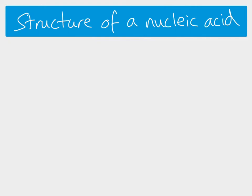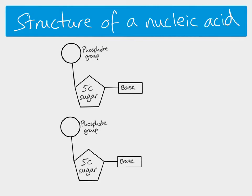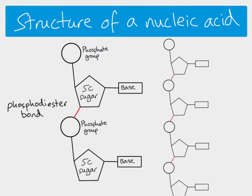Nucleic acid — so DNA or RNA — is made up of thousands of these nucleotides, all bonded together covalently. A bond is formed through a condensation reaction, and this bond joins the pentose sugar and the phosphate group, and it's called a phosphodiester bond — a very strong covalent bond. If we join lots of them together, we get a structure with what we call a sugar-phosphate backbone of the nucleic acid.